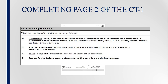For unincorporated associations, attach a copy of the instrument creating the organization, such as bylaws, constitution, and/or articles of association or articles of organization. For trusts, attach a copy of the trust instrument or will and decree of final distribution, including any amendments. For trustees of charitable purposes, provide a statement describing operations and charitable purposes.